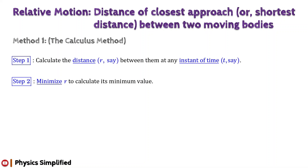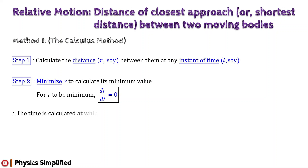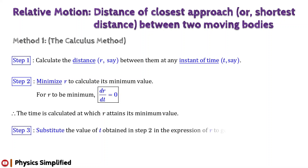Since the separation between the two moving bodies depends on time t, for r to be a minimum, the first order derivative of r with respect to time t must be equal to zero. Therefore, dr/dt = 0. After performing the corresponding mathematical steps, we will find the time at which the separation r attains the minimum value. In our third and final step, we will substitute this value of t in the expression of separation between the moving bodies to find its minimum value, given by r_min.